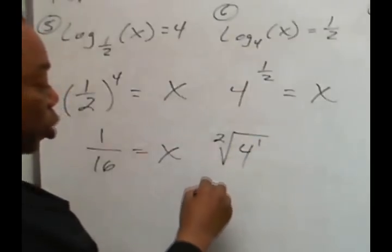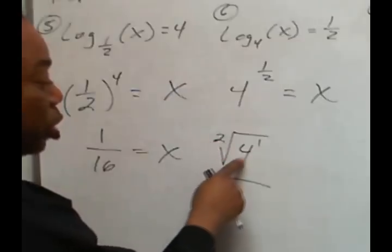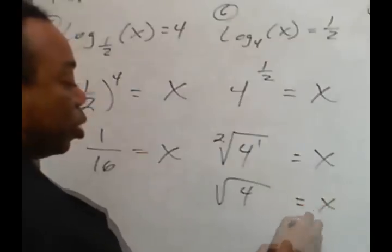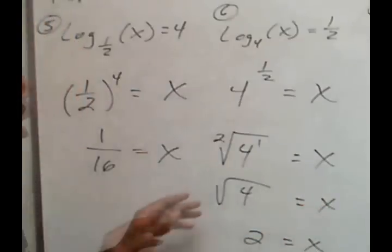Well, a square root is also root. This represents the square root, and 4 to the first power is simply 4. So, the square root of 4 is 2, and that's our x.